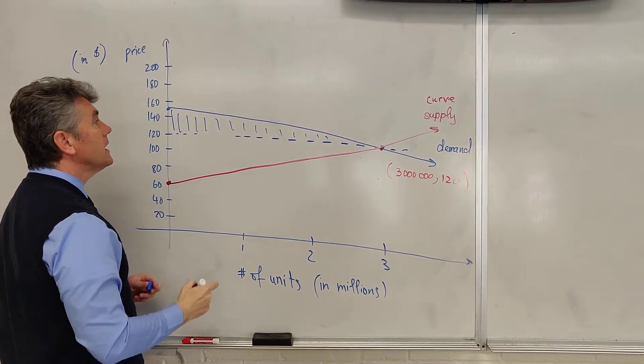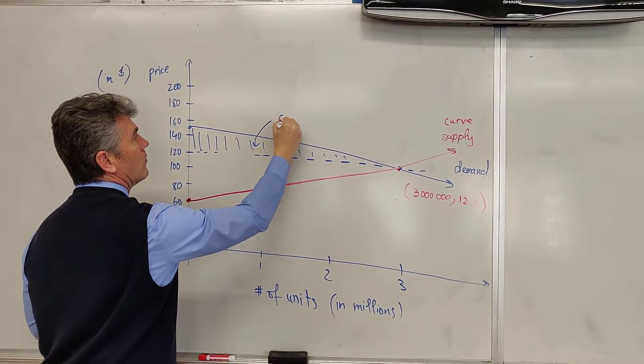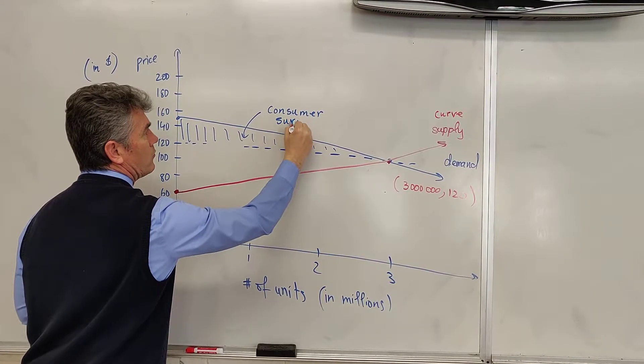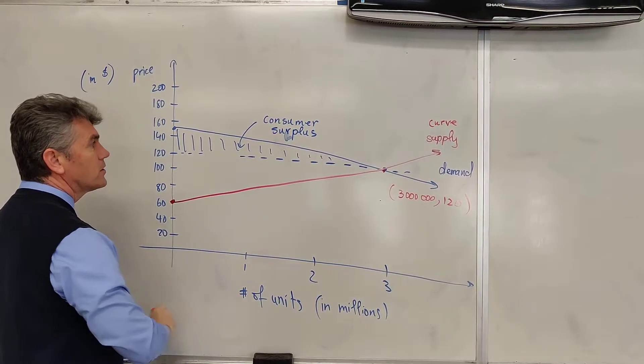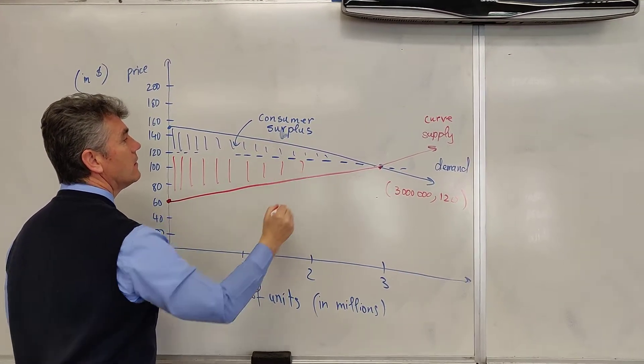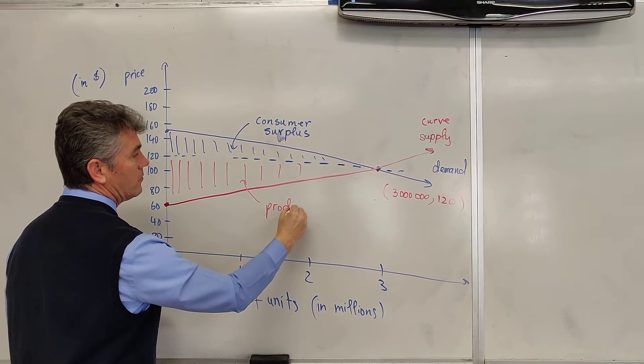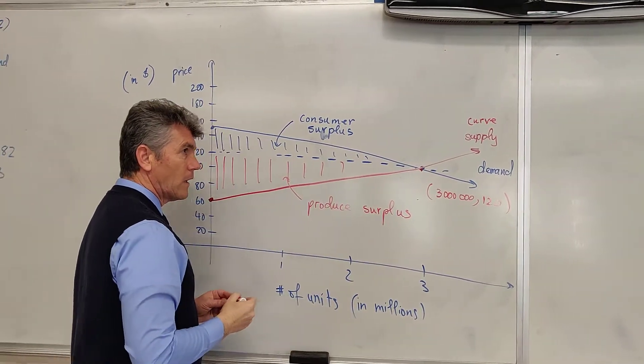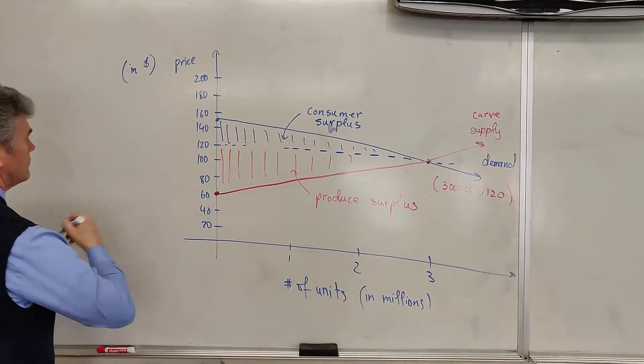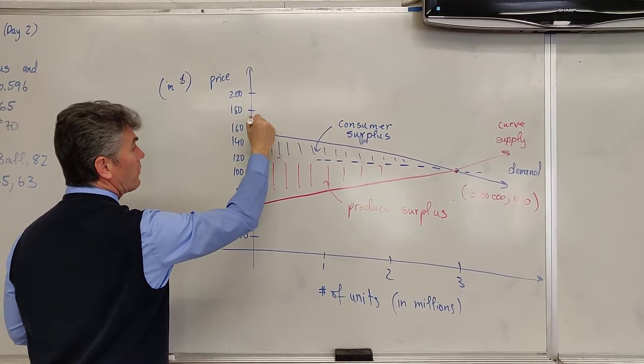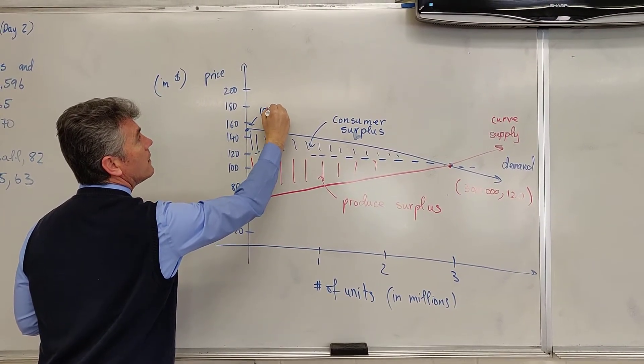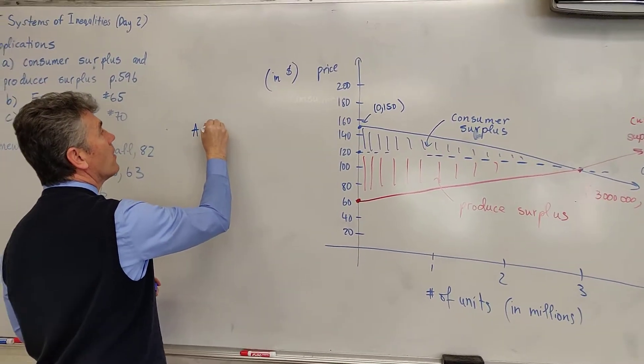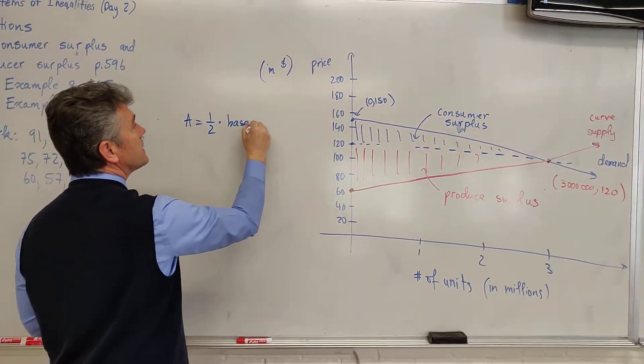The blue triangle represents the consumer surplus, while the area of the red triangle represents the producer surplus. All we want to do now is find their areas. This point is (0, 150), this point is (0, 120).